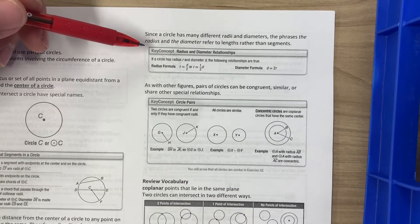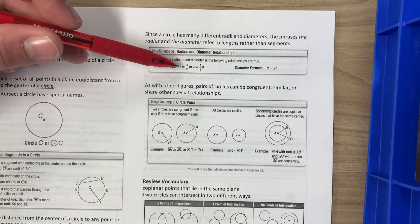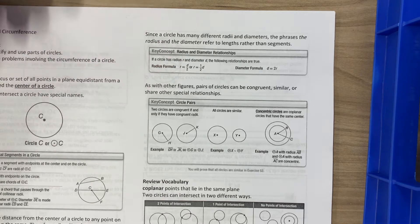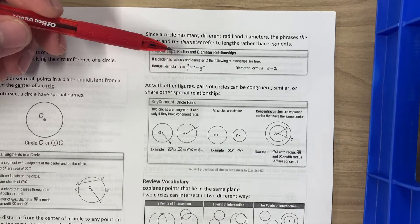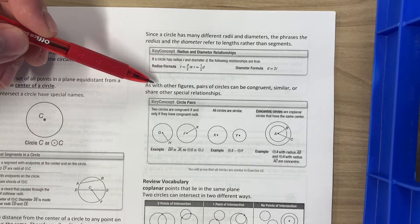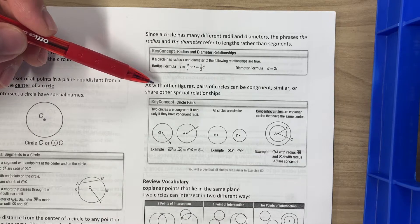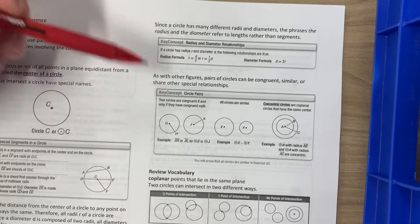Radius and diameter relationships: the radius is one half of the diameter, or D divided by two. The diameter is two times the radius. As with other figures, pairs of circles can be congruent, similar, or share other special relationships.